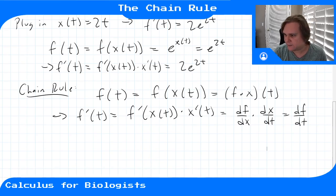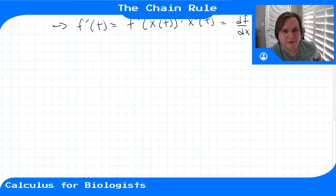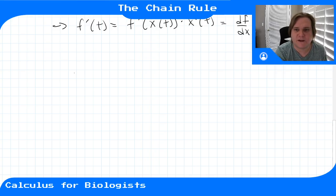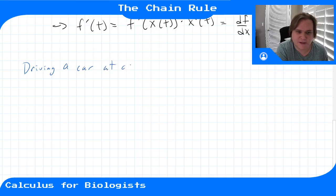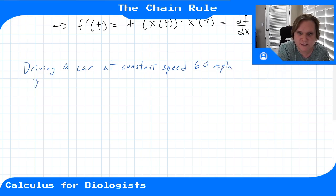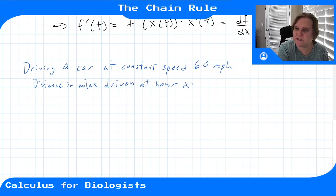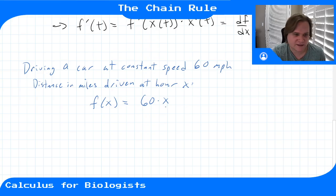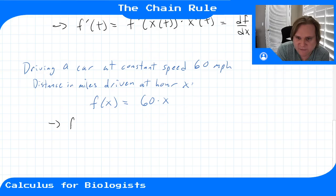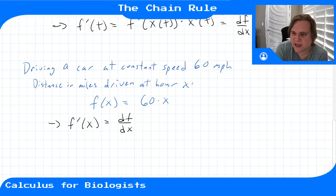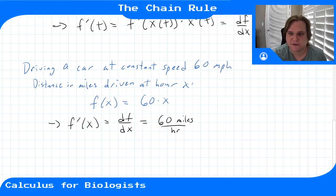This may seem out of nowhere, but you're really just converting between rates of change of different variables. For example, say you're driving a car at a constant speed of 60 miles per hour. We could describe distance in miles driven as f of x equals 60 times x, where x is the number of hours driven. The derivative f prime of x — df/dx — is 60 miles per hour.